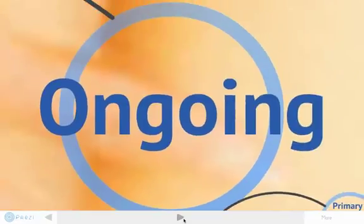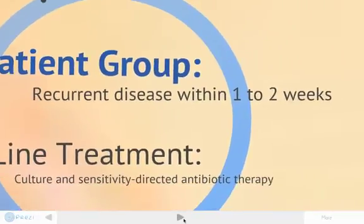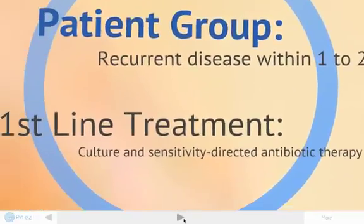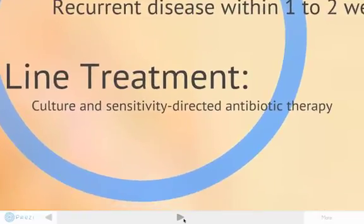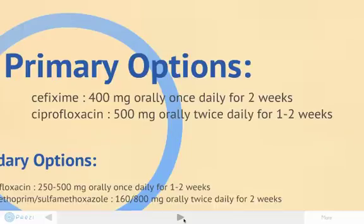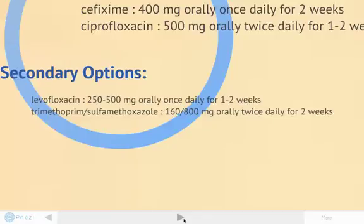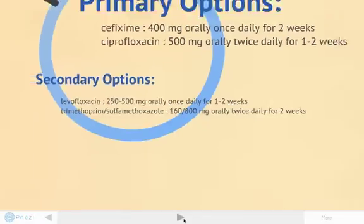Now let's move on to our ongoing patients — those with chronic pyelonephritis. This patient group is defined by recurrent disease within one to two weeks of the first exacerbation. The first-line treatment is culture and sensitivity-directed antibiotic therapy. Primary options are cefixime 400 mg orally once daily for two weeks, and ciprofloxacin 500 mg orally twice daily for one to two weeks. Secondary options are levofloxacin and trimethoprim-sulfamethoxazole.